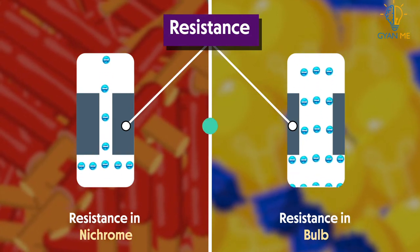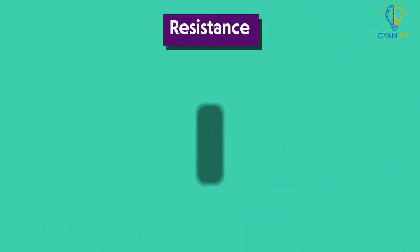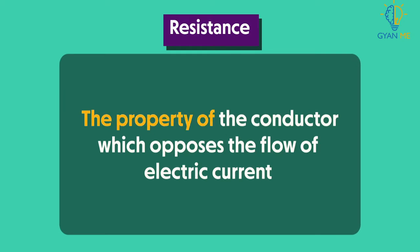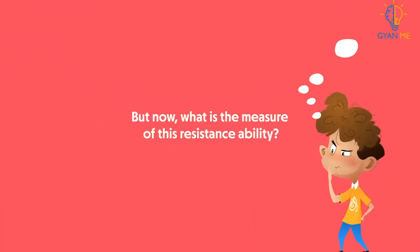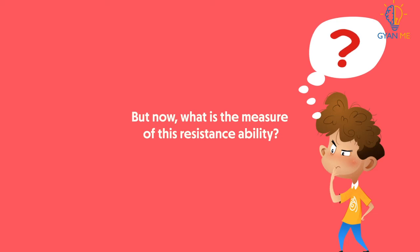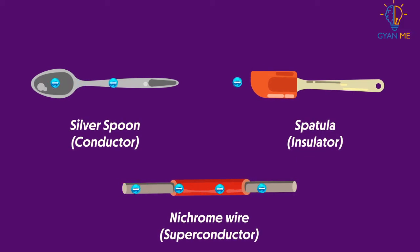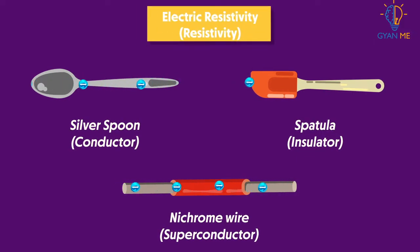Thus, we can define resistance as the property of the conductor which opposes the flow of electric current. We have studied this in our previous video. But now, what is the measure of this resistance ability? The measure of the ability of a material to oppose the flow of current is called its electrical resistivity, or resistivity.